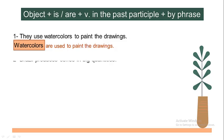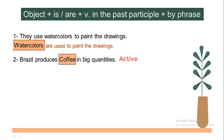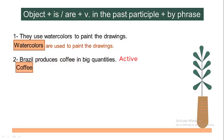Number two: Brazil produces coffee in big quantities. Brazil is the subject, produces is the main verb. What does Brazil produce? It produces coffee, so coffee receives the action. We'll start with coffee. Coffee — is it singular or are? Great, coffee is singular. Coffee is. And the past participle of produce is produced: in big quantities by Brazil. Coffee is produced in big quantities by Brazil.